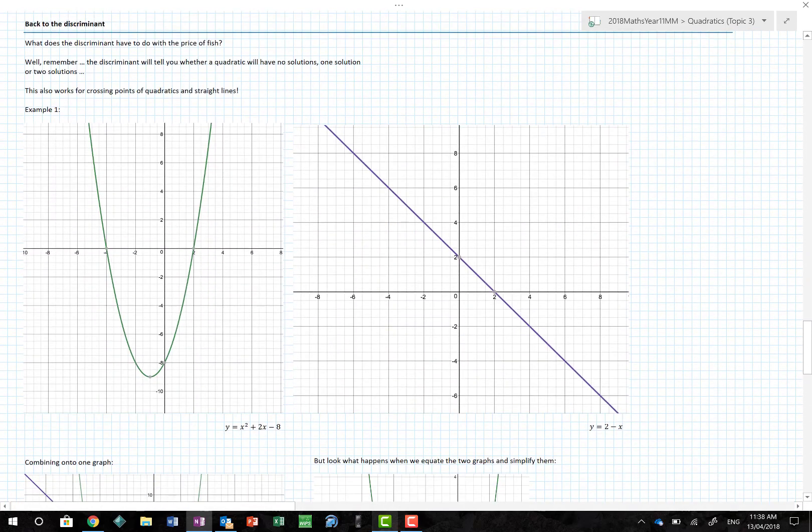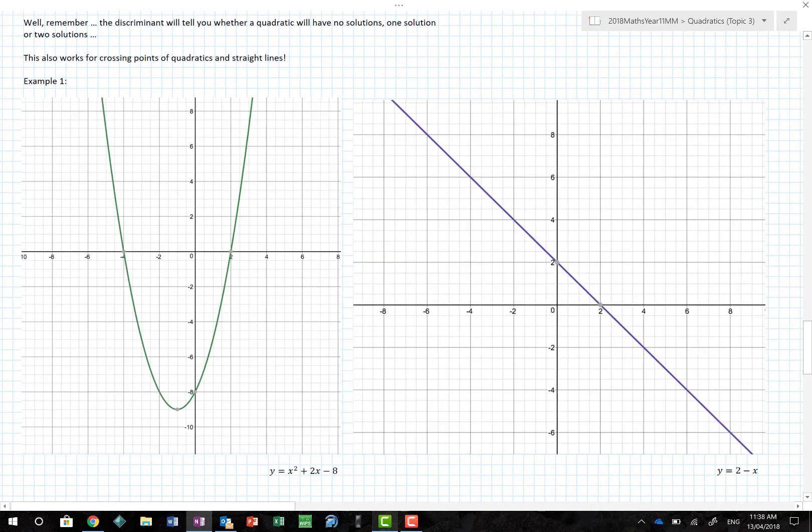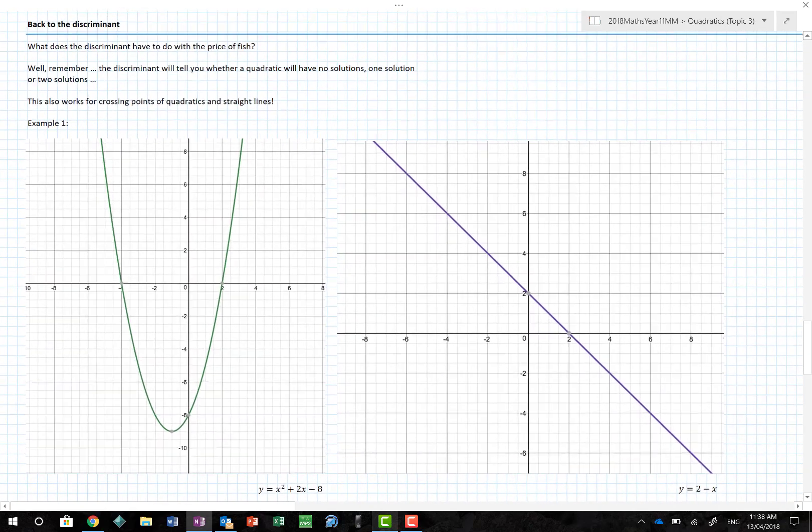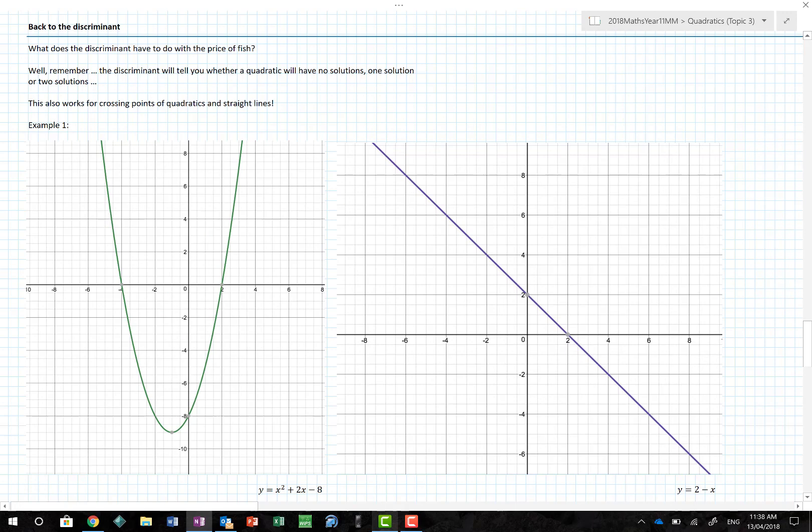Let's go back to the discriminant. What does it have to do with the price of fish? The discriminant will tell you whether a quadratic will have no solution, one solution, or two solutions. And it also works with the crossing points of quadratics and straight lines.